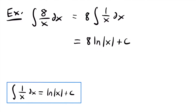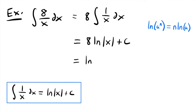While this is a perfectly acceptable answer, we could simplify a little more by using a property of logs: the natural log of a to the power of n is equal to n times the natural log of a. In this case, we're reversing this process because we have 8 times the natural log of x, where 8 is n. So we can move that coefficient to the inside to be a power of x, and this would be equal to the natural log of the absolute value of x to the 8th power plus c.